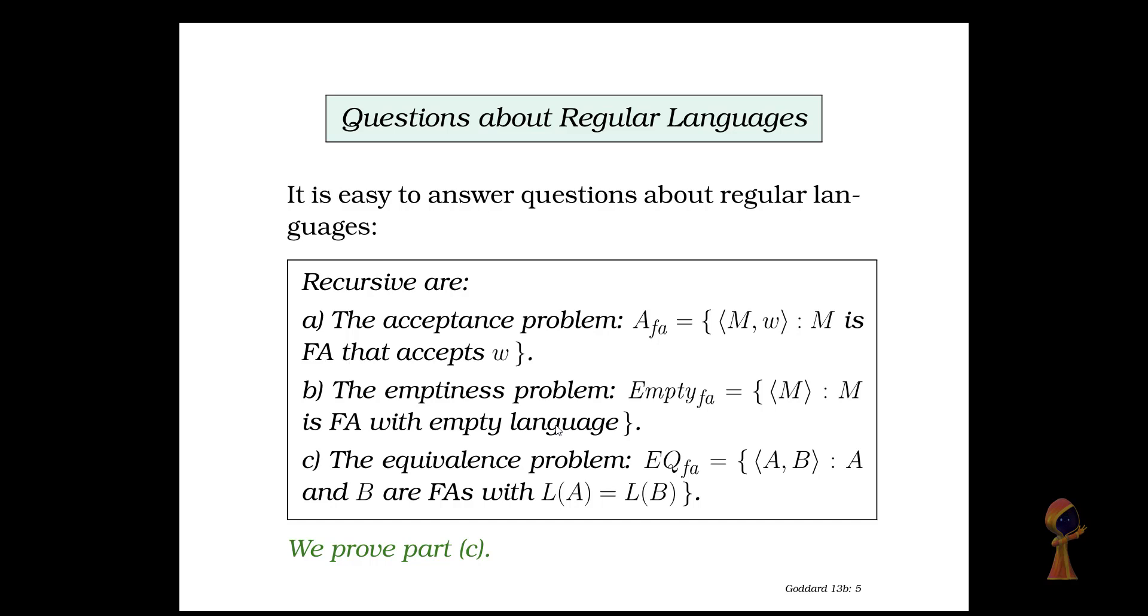There are certain questions about the regular languages and these are called decidable questions. The first one is the acceptance problem where A_FA is M comma W, where M is a finite automaton that accepts W. The emptiness problem empty_FA where M is a finite automaton with empty language. The equivalence problem EQ_FA where A and B are finite automaton with the condition that language of A is equal to the language of B.